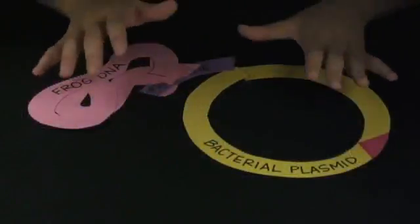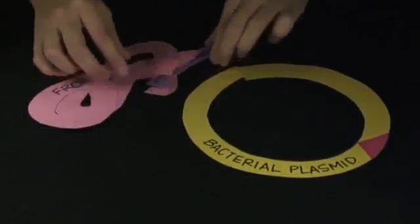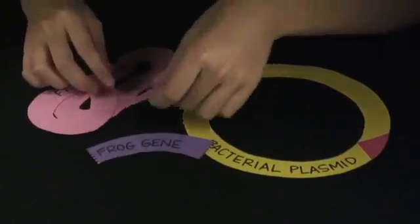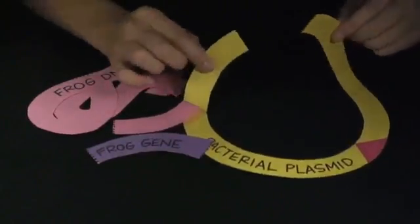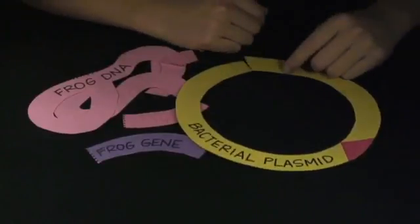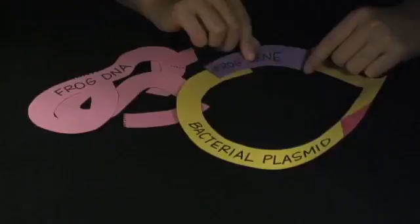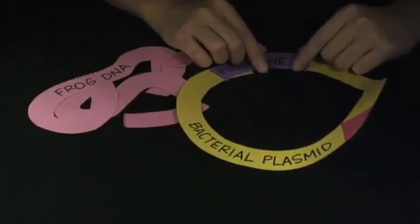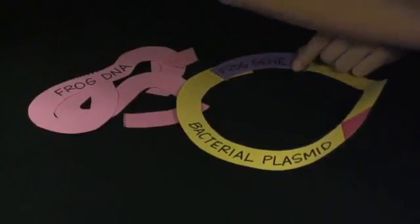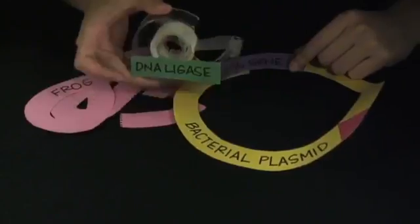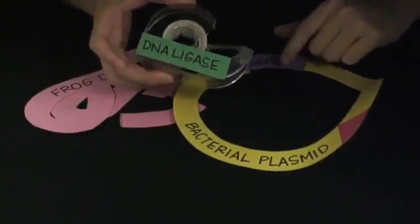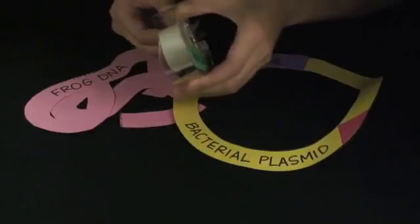Here's what's going on in the tube now. I've got pieces of frog DNA and I've got cut plasmids like this. I need to add this guy into this plasmid and the way I'm going to do that is by adding an enzyme called DNA ligase. This enzyme kind of acts like tape and it fixes the DNA insert into the plasmid.